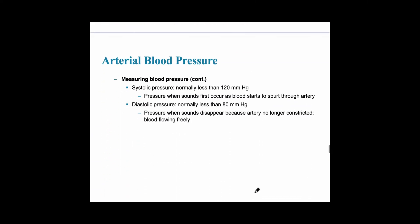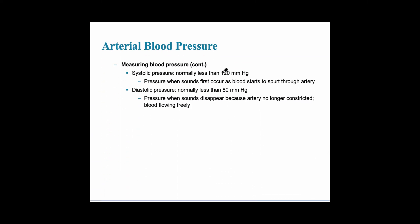When measuring blood pressure, normal systolic should be less than 120 mmHg and diastolic should be 80 or below. When measuring, the brachial artery is compressed, and as pressure is released, sounds first occur — those are Korotkoff sounds, representing turbulence as blood flows through the artery. When those sounds first appear, that's the systolic number. When the sounds disappear, that's the diastolic number.